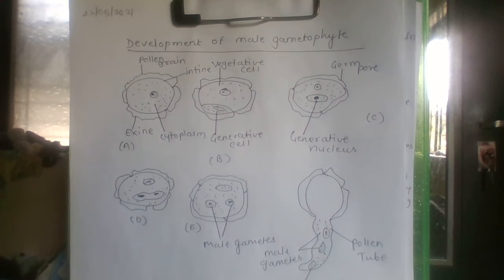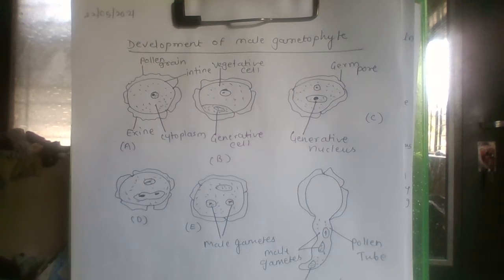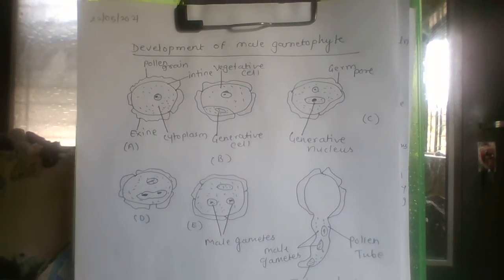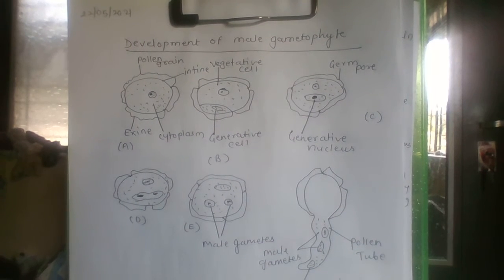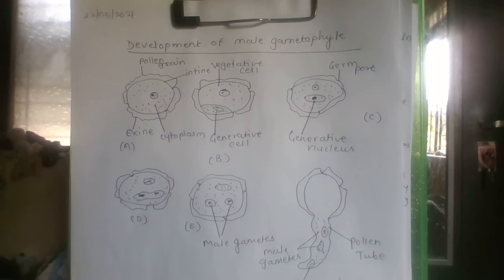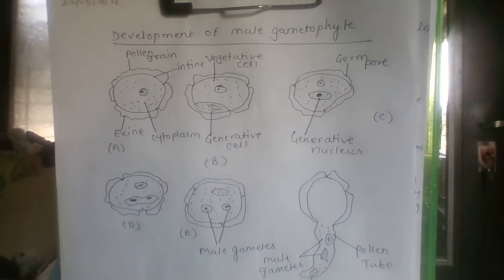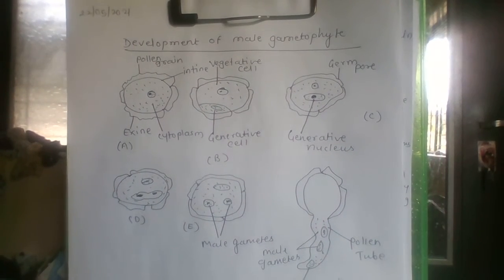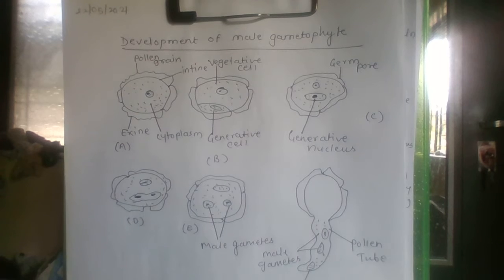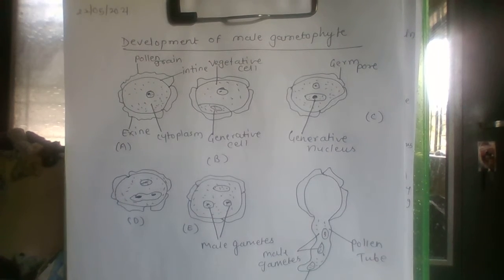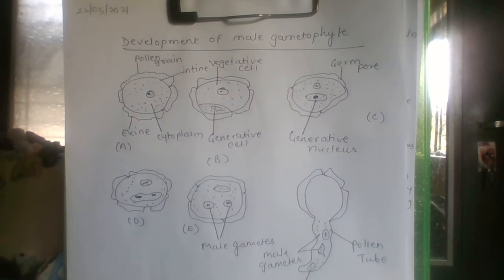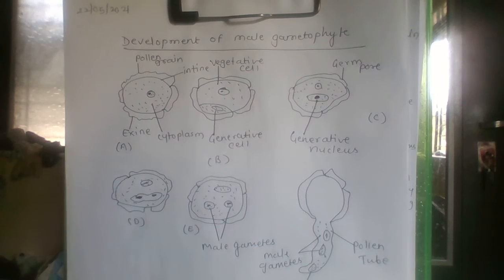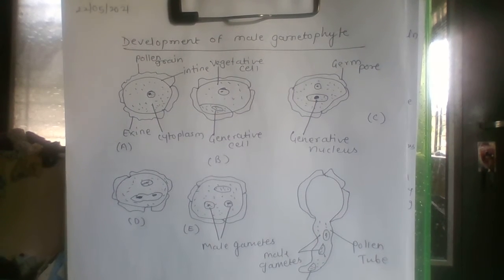The pollen grain undergoes its first mitotic division to produce a bigger, naked vegetative cell and a small thin-walled generative cell. The vegetative cell is rich in food and has an irregularly shaped nucleus. The generative cell floats in the cytoplasm of the vegetative cell.